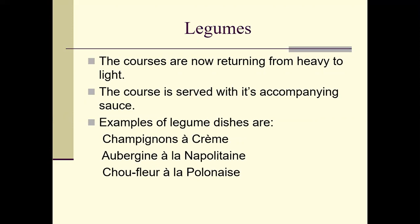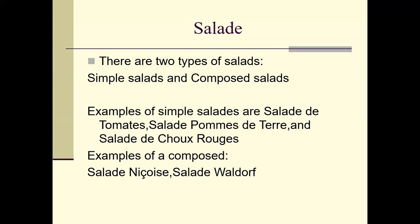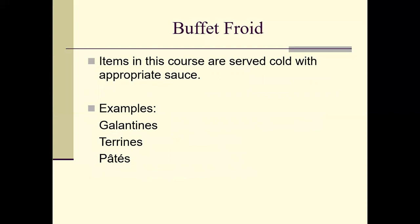The légumes course marks a return from heavy to light. You started off light, got heavier, and now you're getting light again. The course is served with an accompanying sauce. Examples of légume dishes include champignons à la crème, aubergine à la napolitaine, and choufleur à la bolognese. Then your salad course — there are two types: simple salads and composed salads. A simple salad is tossed with a few ingredients and proper dressing; a composed salad is a nicely arranged salad.